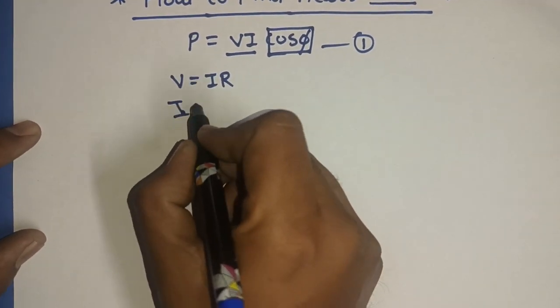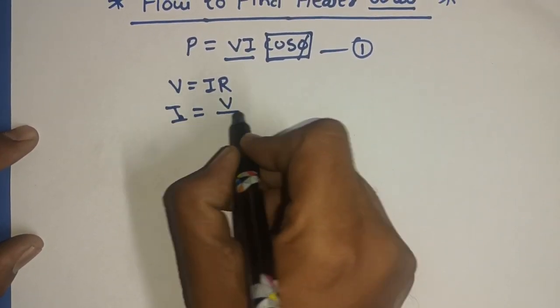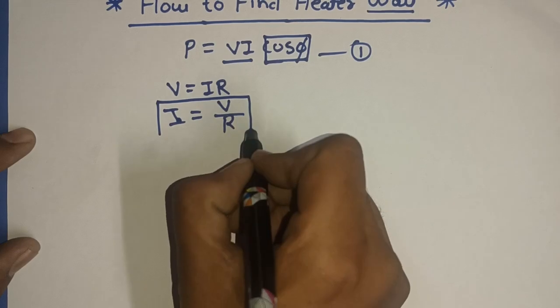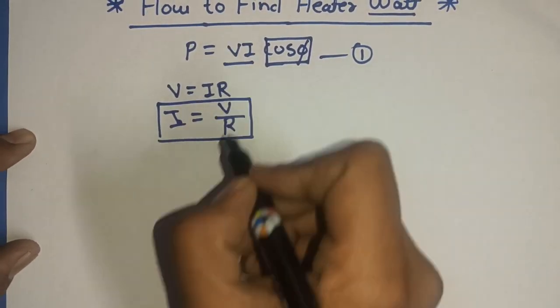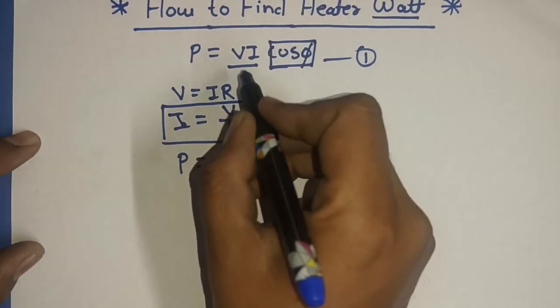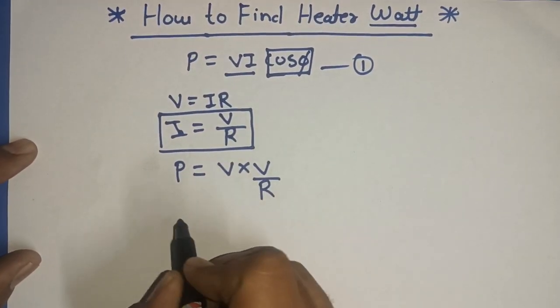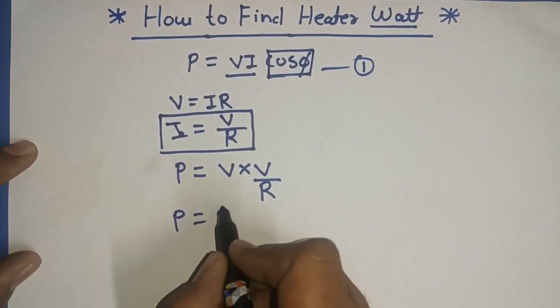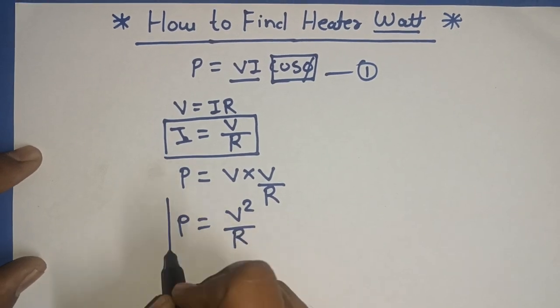So, we just required I value, current value, I is equal to V by R. Now, we put I value in power formula, P is equal to V, multiply by in I place V by R. So, P is equal to V square by R.